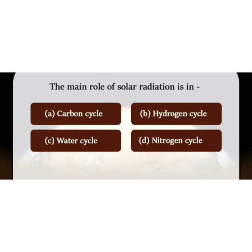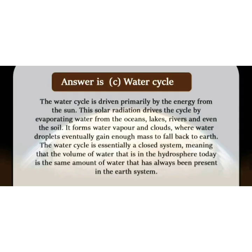The next question: the main role of solar radiation is in — this is a geography question and geography questions do appear in exams. The right answer is option C, water cycle. Please read the details below.